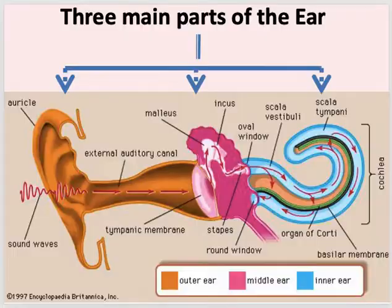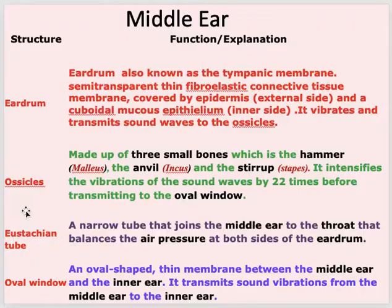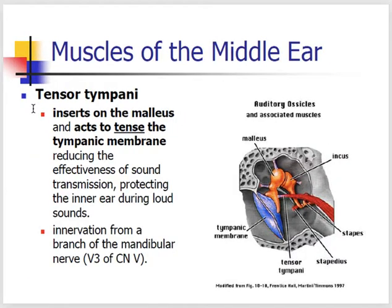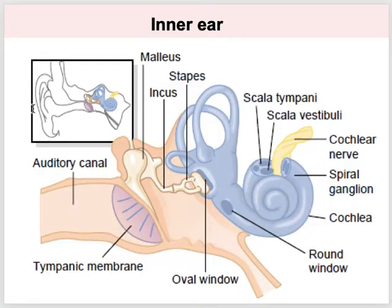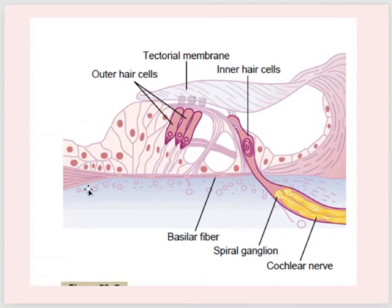To summarize again: the three main parts of the ear are the outer ear, the middle ear — containing the eustachian tube, ossicles, eardrum, stapedius, and tensor tympani — and the inner ear. Perilymph resembles ECF and endolymph resembles ICF. The outer and inner hair cells, tectorial membrane, spiral ganglion, cochlear nerve, and basilar fibers are all part of the cochlear structure.